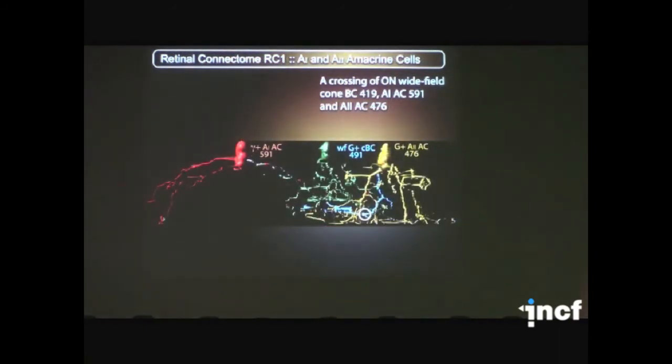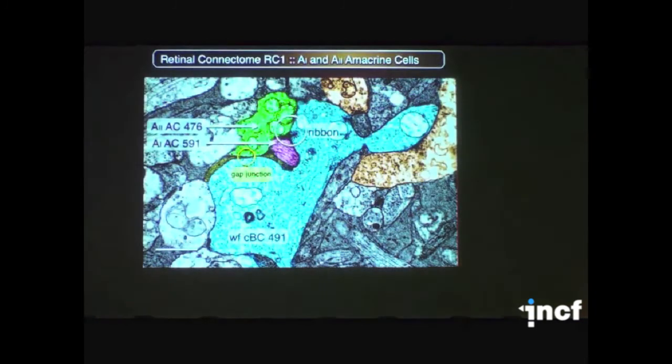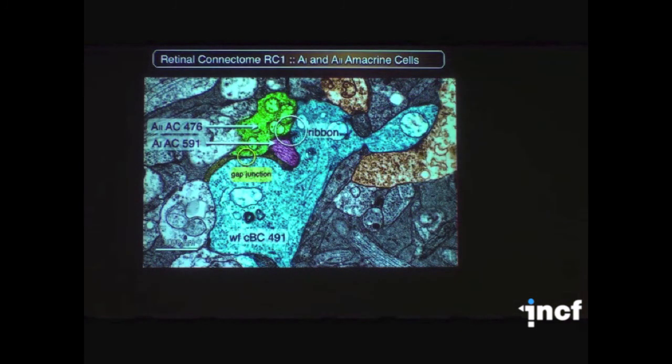And we were able to mine specific crossings to look at potential synaptic interactions. This is a particularly fun one because these two cells, 476 and 591, are in the rod pathway and they're supposed to receive synaptic input only from rod pathway bipolars. But they're getting a ribbon input from a wide field cone bipolar cell. So they do get active photopic input, which we actually knew physiologically but had no anatomical basis for.